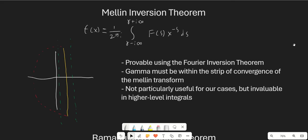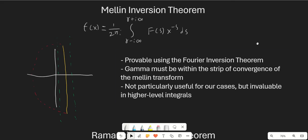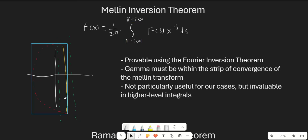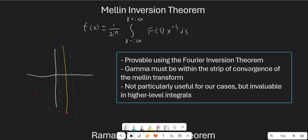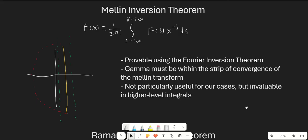Here is the Mellin inversion theorem. This isn't really important to know for integration — I just think it's interesting to know, so you can skip this section if you want. There's actually a formula for the inverse Mellin transform, which is f of x equals 1 over 2 pi i, the integral from gamma minus i infinity to gamma plus i infinity. Gamma is just an arbitrary constant which has to be within the region of convergence of the Mellin transform. For example, if the Mellin transform converges between s equals 0 and s equals 1, then gamma has to be between 0 and 1. We're multiplying f of s times x to the negative s times ds. We usually close the contour in the left half plane, and x to the negative s will go to 0 if x is large.